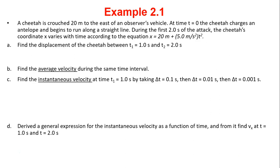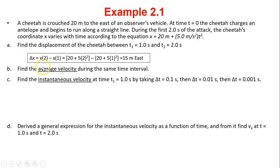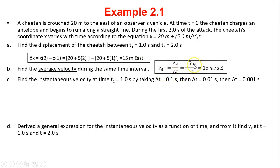Let's look at this example. A cheetah is crouched 20 meters to the east of an observer's vehicle. At time t equals zero, the cheetah charges the antelope and runs along a straight line. During the first two seconds, the cheetah's coordinate x varies with time according to x equals 20 meters plus 5t squared. Find the displacement between t1 equals 1 second and t2 equals 2 seconds. Displacement is the change in position, so we find the position at t equals 2 and t equals 1 and subtract, giving 50 meters east. Average velocity is displacement over time: 50 meters over 1 second equals 50 meters per second east.